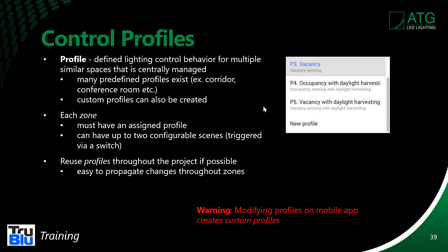Control profiles are defined lighting control behaviors for multiple devices. Spaces that are essentially managed — all the offices, for example, may be on the same profile. The various profile types include vacancy sensing, occupancy sensing with daylight harvesting, vacancy sensing with daylight harvesting, or you can create a new profile. Each zone must have some type of profile. You can reuse profiles throughout the project — for 10 offices, you can easily reuse that profile for all 10.